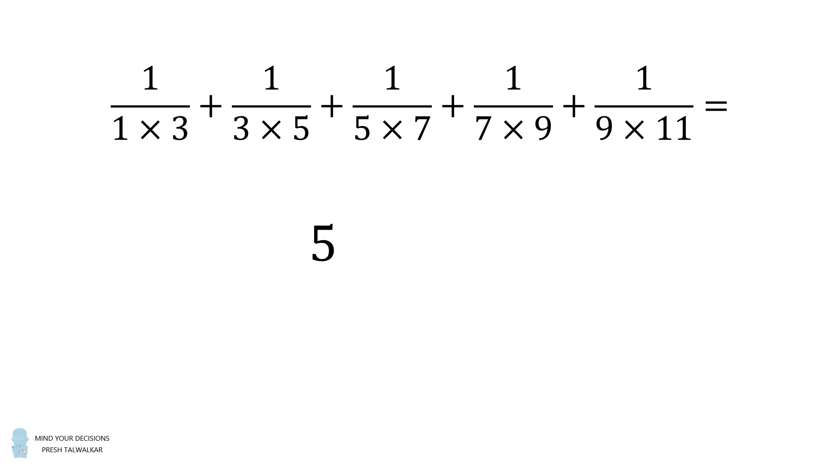We then divide by the following product. We take the very first number in the first fraction, that's 1, and we multiply it by the very last number in the last fraction, that's 11. 5 divided by 1 times 11. 1 times 11 is equal to 11. So the answer is 5 over 11, and that's it. Wow.